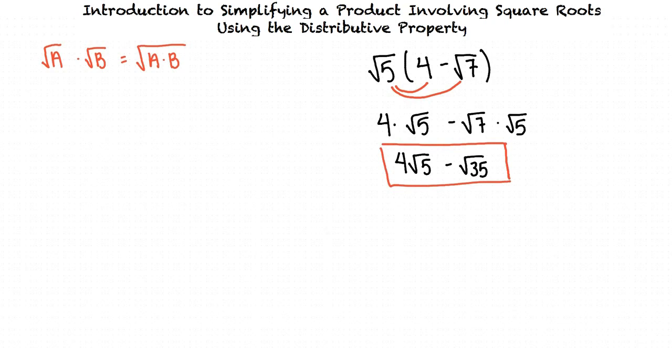To simplify a product involving square roots, we first distribute the square root expression outside the parentheses to each of the terms inside the parentheses. When we multiply two square root expressions together, we can write the product as one square root expression by multiplying together the numbers inside the two original square roots. Great work — it seems like you're getting the hang of this topic.